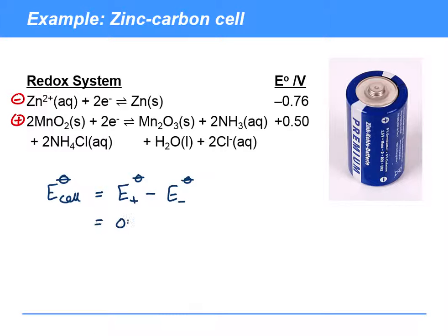And so that's going to be 0.5 minus minus 0.76, which gives us a 1.26 volt cell potential.